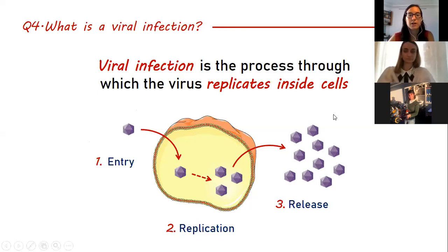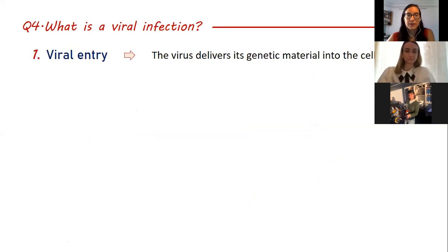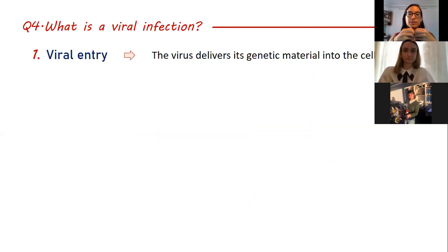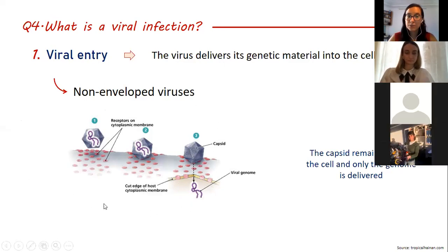I'll explain the three steps, starting with entry. Viral entry is the process by which the virus delivers the genetic material into the cell. Sometimes the virus doesn't enter with the full particle — it just delivers its genetic material. This is the case for all non-enveloped viruses: they bind to a receptor on the surface of the cell and inject their DNA or RNA into the cell. The capsid remains outside. This is still considered viral entry because the genetic material is inside the cell.